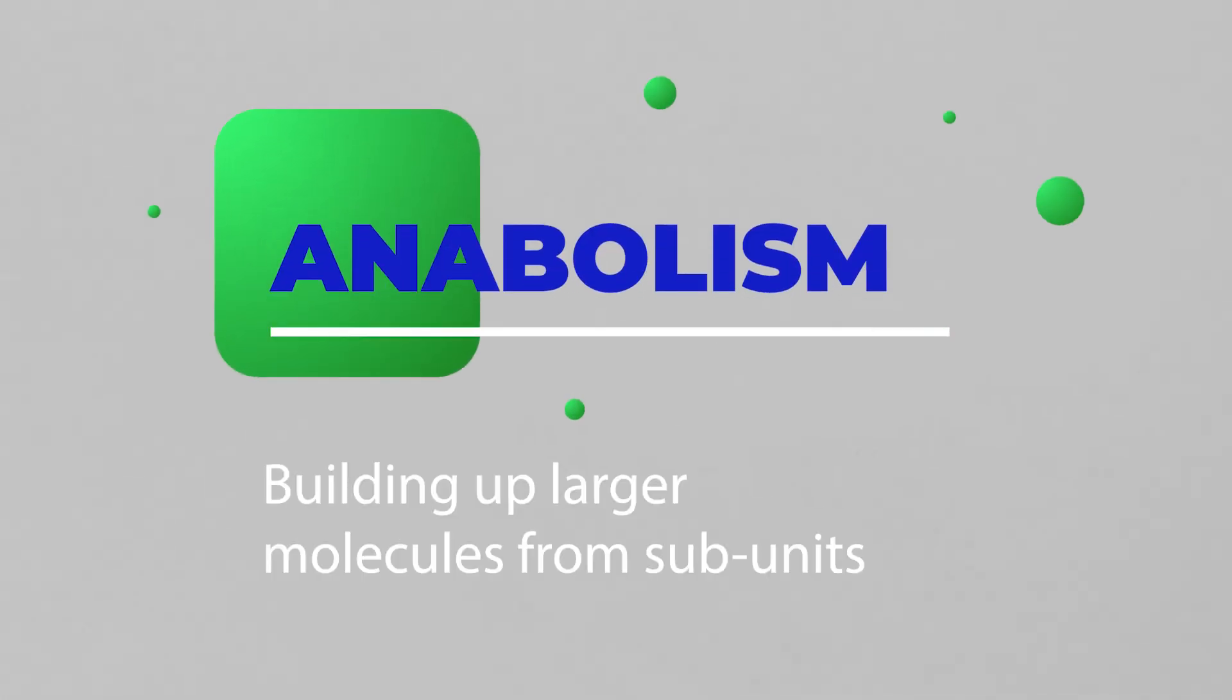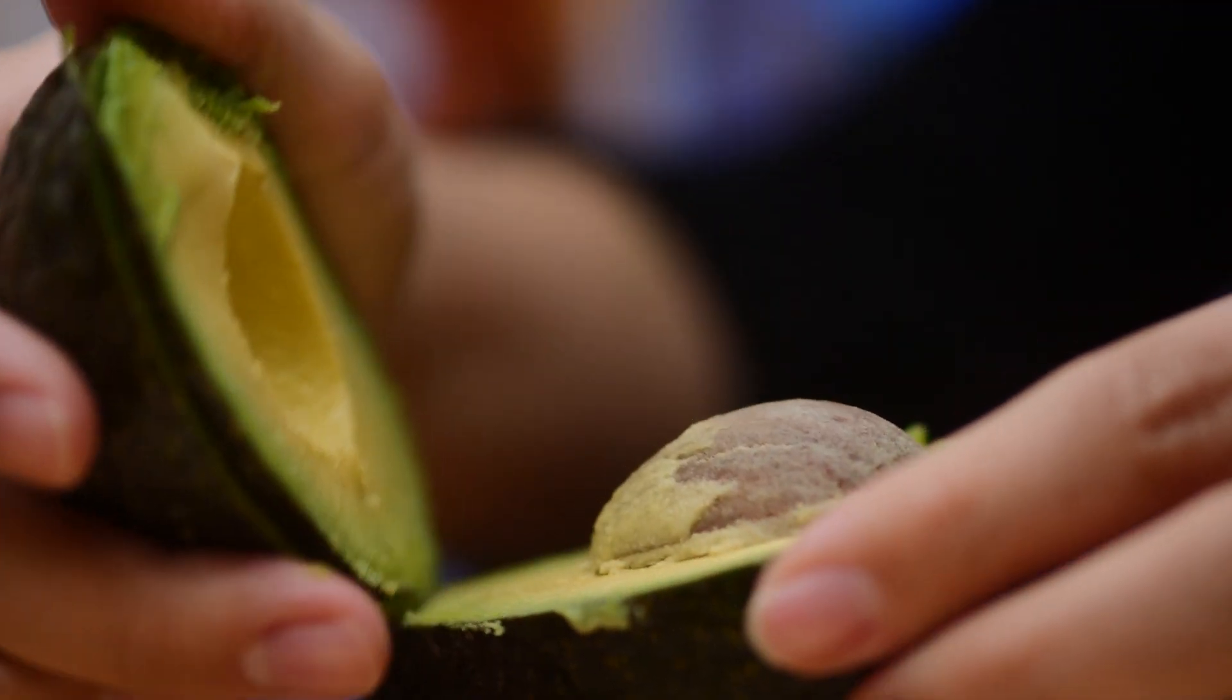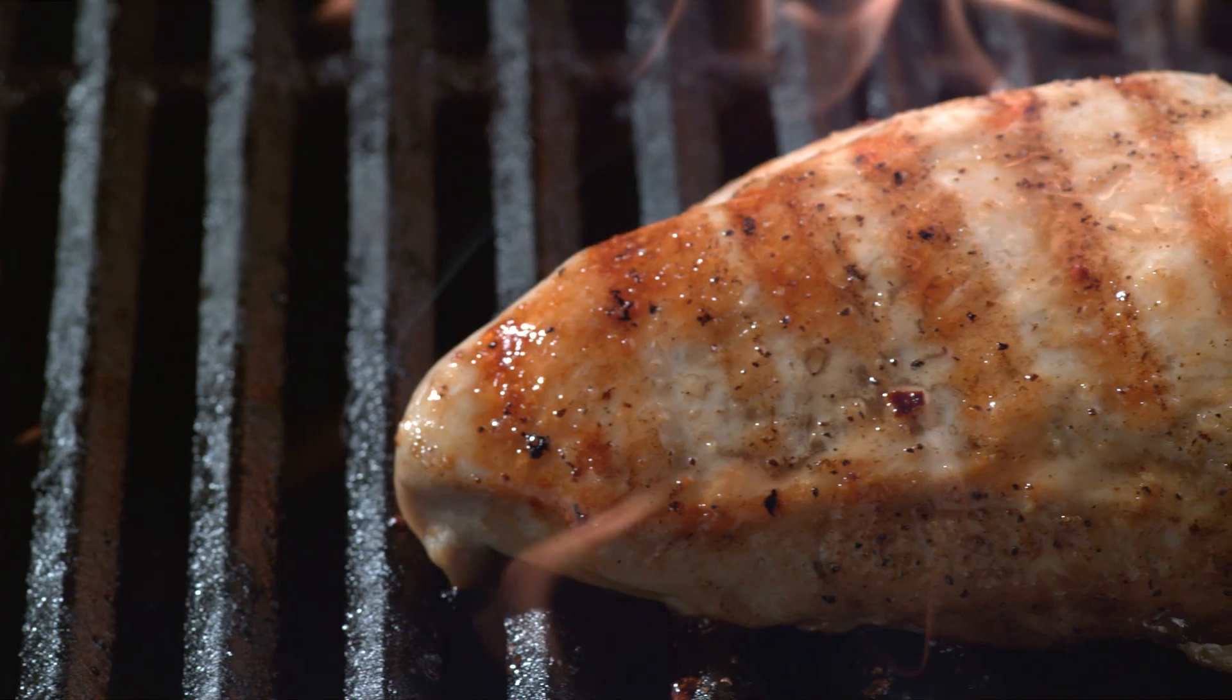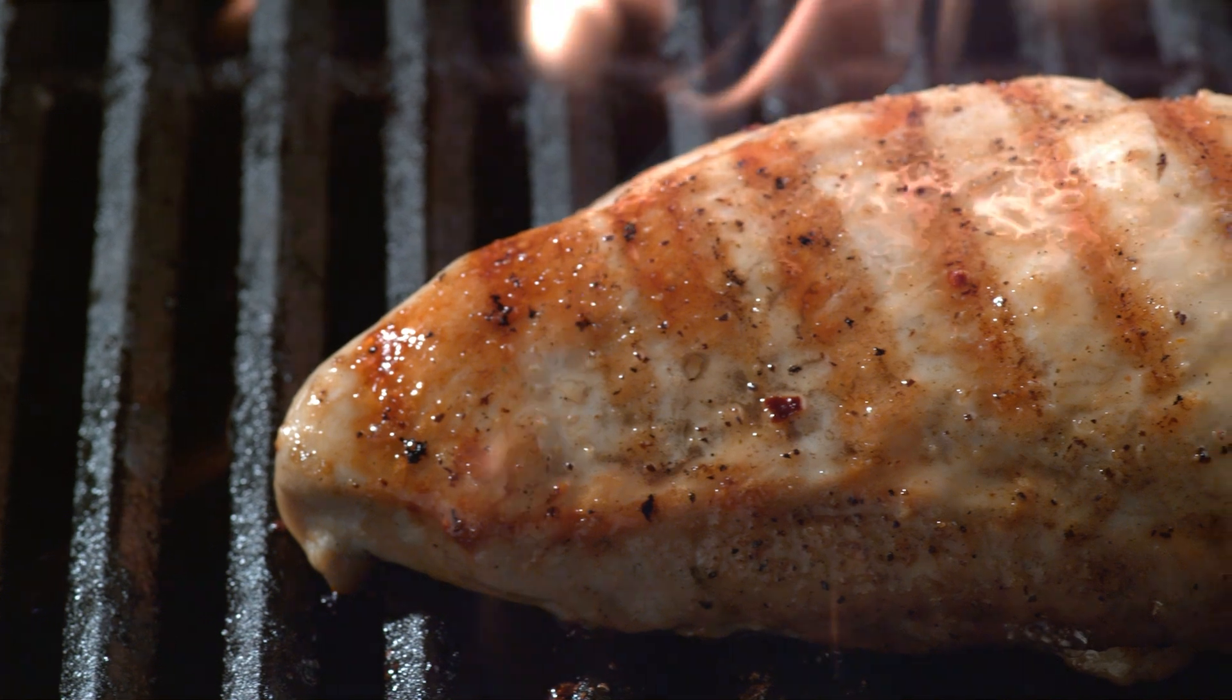Anabolism is the building up of larger molecules from smaller subunits. This might be the synthesis of larger macromolecules like fats, carbohydrates, or proteins. Our cells will make these from building blocks in order to support the needs of the cell at any point in time.